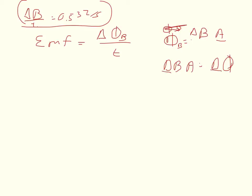And these are supposed to be deltas. Since I have B over time, then I have the change of flux over time is equal to the change in the magnetic field times the area over time.